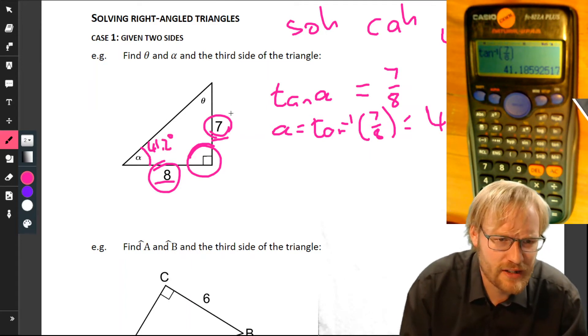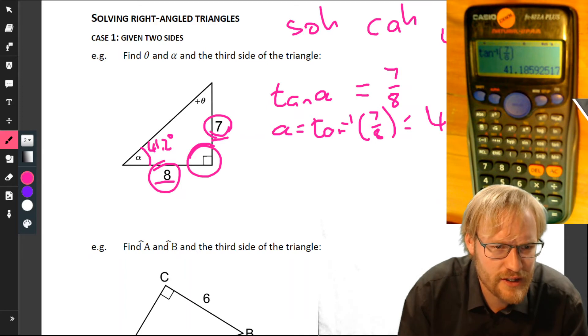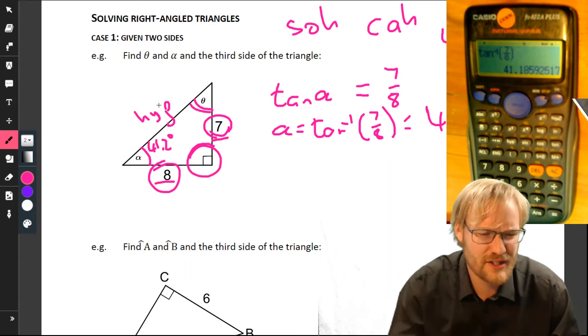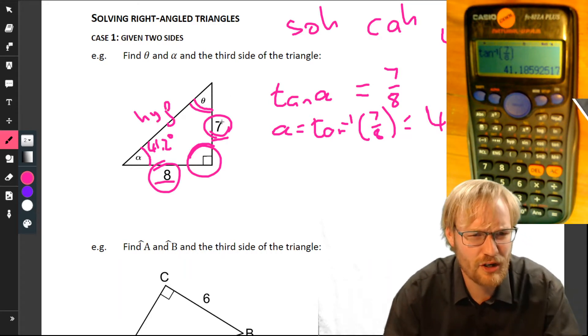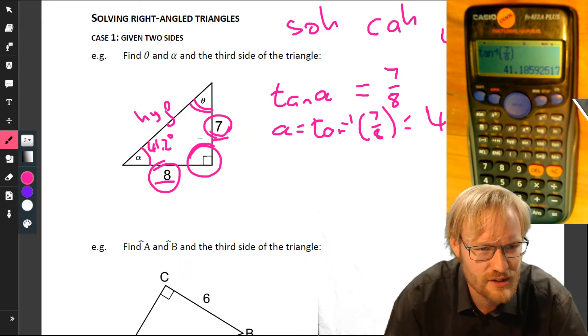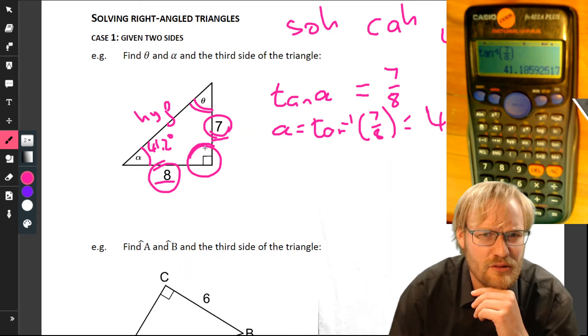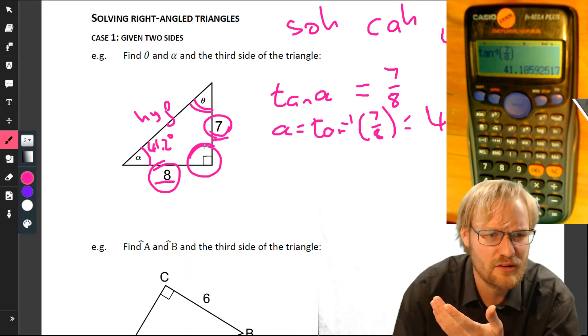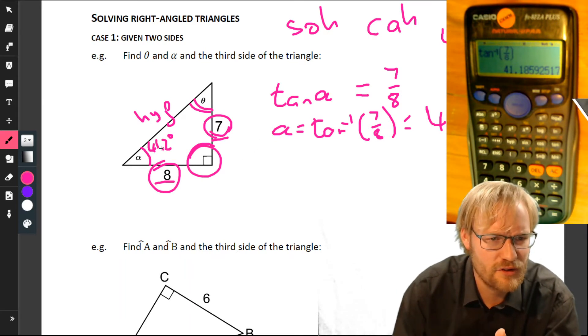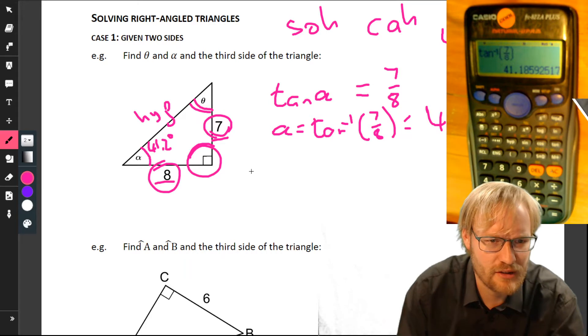Now we want to find out two other things: what theta is and what this hypotenuse is. For theta, we could go a similar option—tan of theta is 8 over 7, then shift tan—or sum of angles in triangle: 90 degrees, 41, what would that be?